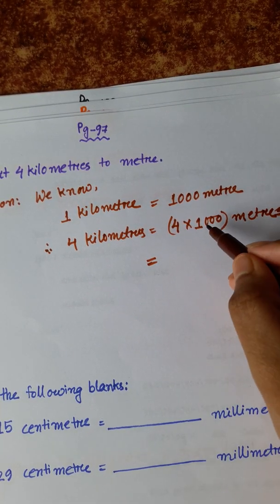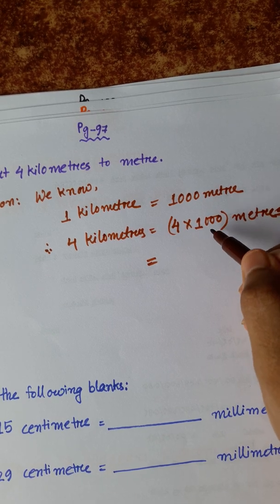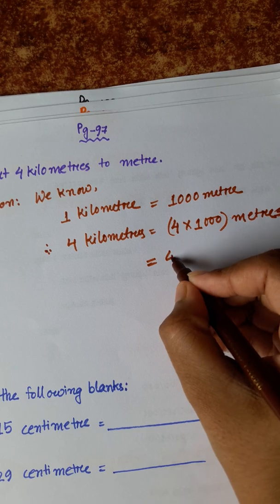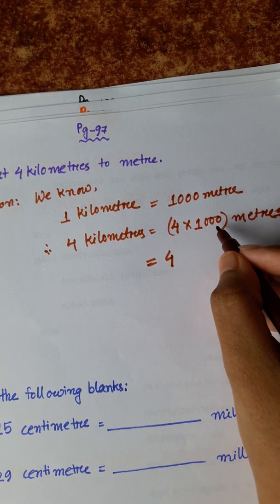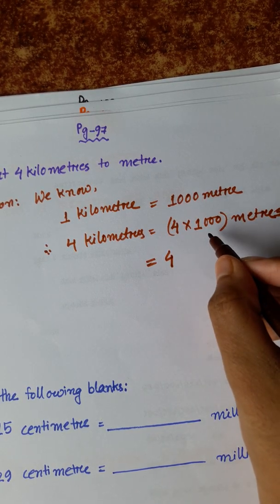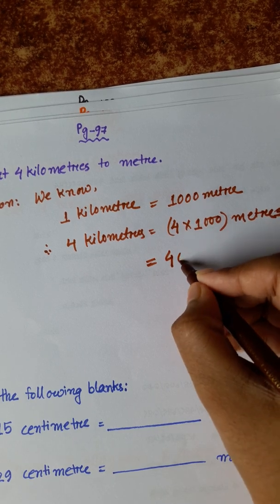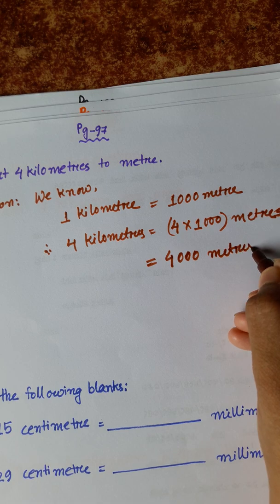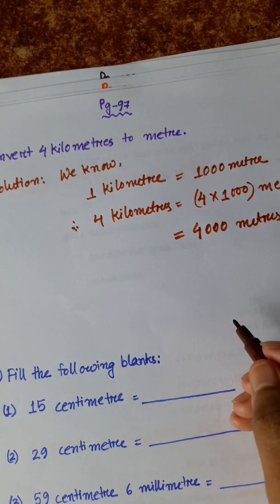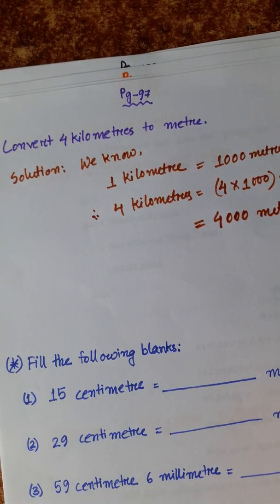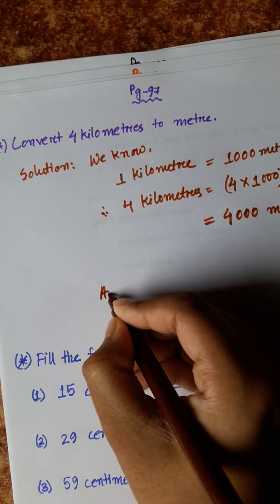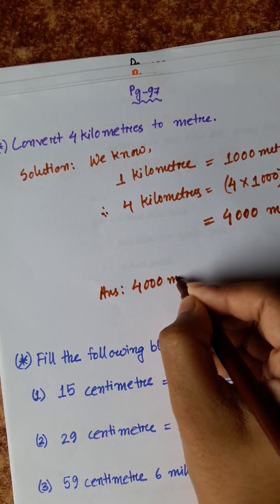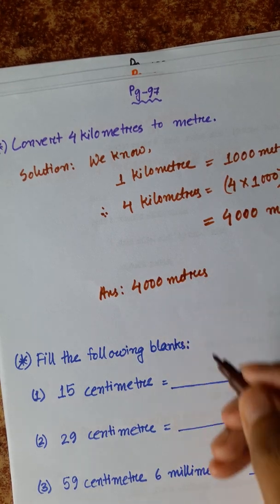To multiply, we write the multiplicand first and then add the zeros. So 4 into 1000 gives 4000 meters. Converting 4 kilometers gives us 4000 meters. The answer is 4000 meters.